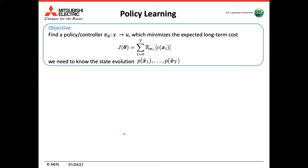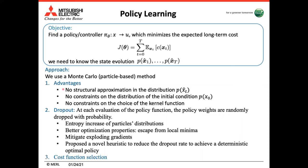During policy learning, we want to optimise the policy that minimises the expected long-term cost. To do so, we need to estimate the evolution of the state P(X1) to P(Xt). We use a particle-based method. The advantages of this method are that there is no structural approximation in the distributions of the states, and there are no constraints on the distribution of the initial conditions P(X0), meaning we can also describe systems with multimodal distributions. No constraints on the choice of kernel functions are required, thanks to this Monte Carlo approach, which was not possible with other methods like moment matching.